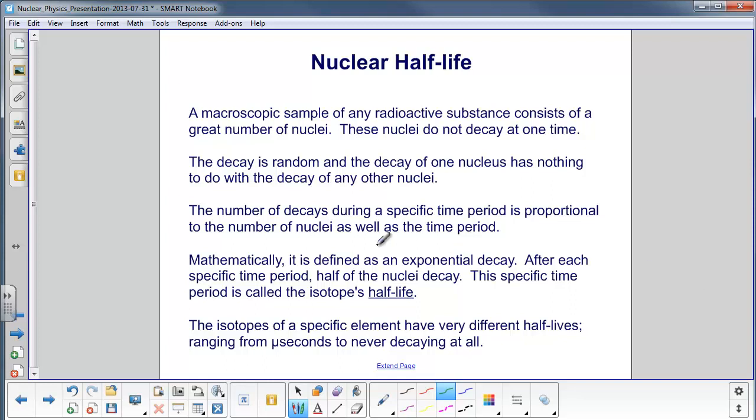The decay is random, and the decay of one nucleus has nothing to do with the decay of any other nuclei. The number of decays during a specific time period is proportional to the number of nuclei, as well as the time period.